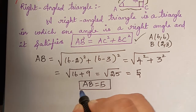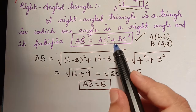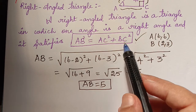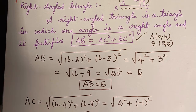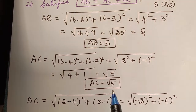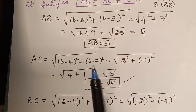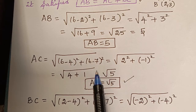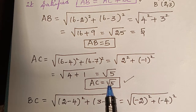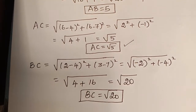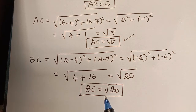Similarly, we have to find AC and BC. Using the distance formula for coordinates A and C, I have obtained AC = √5. Similarly, BC is evaluated and it is equal to √20.